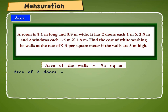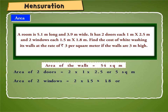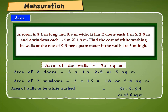Area of two doors is equal to 2 into 1 into 2.5, or 5 square meter. Similarly, area of two windows is equal to 2 into 1.5 into 1.8, or 5.4 square meter. The walls have two doors and two windows, so we subtract the total area of the doors and windows from the area of walls to find the area to be whitewashed. Area of walls to be whitewashed is equal to 54 minus 5 minus 5.4, or 43.6 square meter.